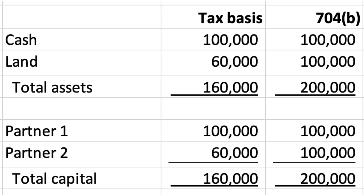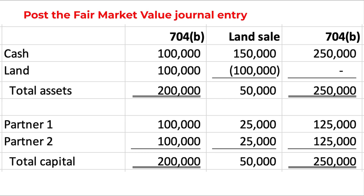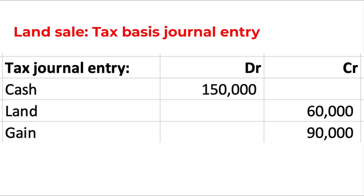Keeping track of two different balance sheets — tax basis and 704B — is a useful tool in applying Section 704C. Let's assume that the land is later sold for $150,000. Here is the journal entry for the 704B set of books. Under the substantial economic effect rules, each partner is allocated 50% of the economic gain, and that gain is reflected in the partners' economic capital accounts. Here is the journal entry for the tax set of books. The gain is $90,000.